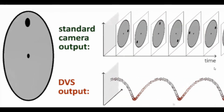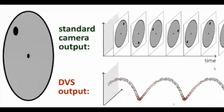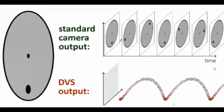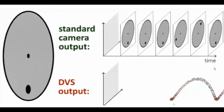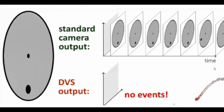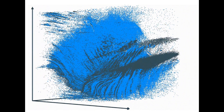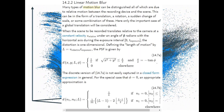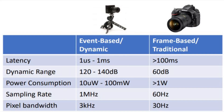Here's a really nice GIF that demonstrates how much more data an event-based camera can collect compared to a standard camera. Event-based cameras can capture data so finely that they don't suffer from motion blur. If you take a look at this table that compares the specs between event-based cameras and frame-based cameras, you can see even more ways that event-based cameras outclass traditional cameras.